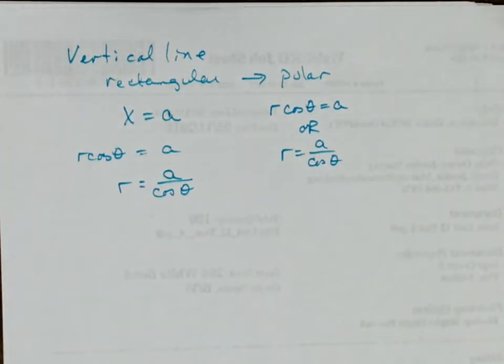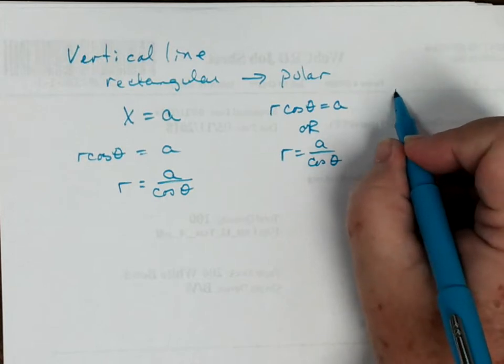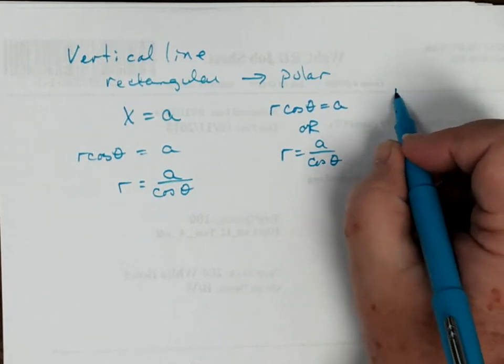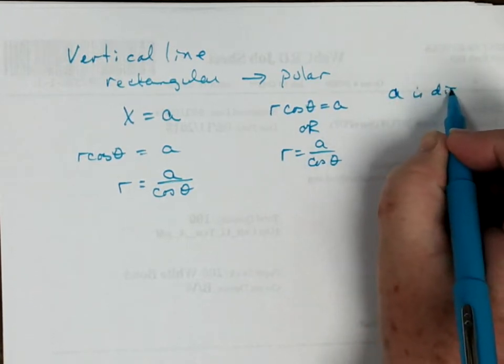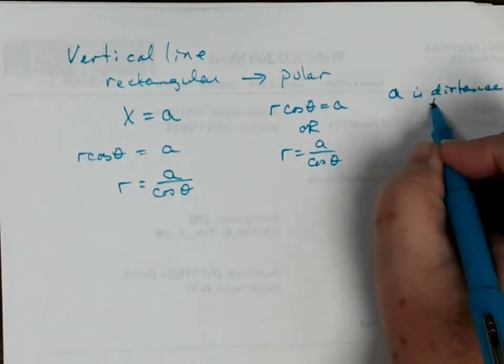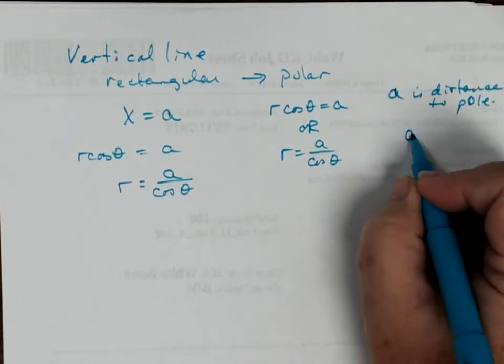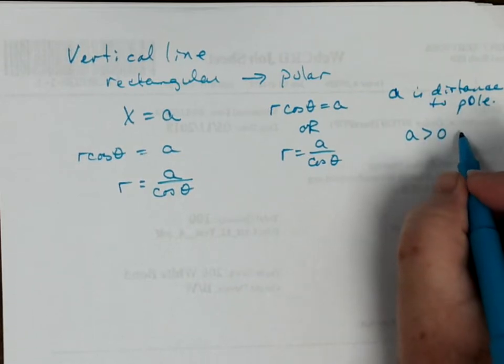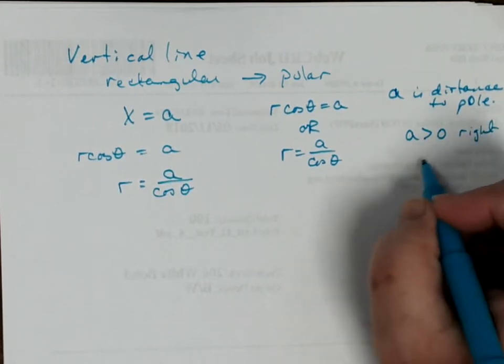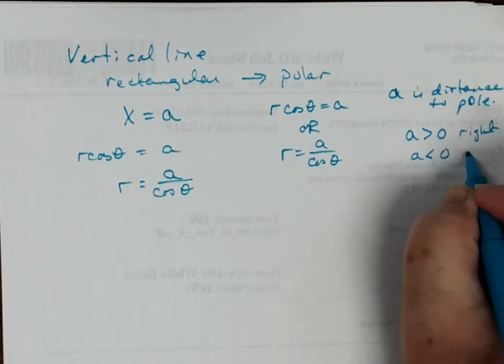Now also remember that a is the distance to the pole. If a is positive, then it is to the right of the pole. And if a is negative, it is to the left of the pole.